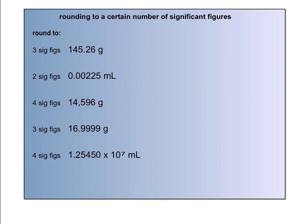We have a bunch of measurements here, and we want to round them to a certain number of significant figures. In the first one, 145.26 grams — using the significant figure rule 'dot right if not left' — we know that measurement originally has five significant figures. We want to cut that down to three. The one is our first significant figure, the four is our second, and the five is our third, and that's where we cut it. With a two next to the five, we leave it a five. So this rounds to 145 grams to three significant figures.